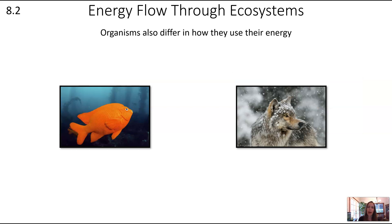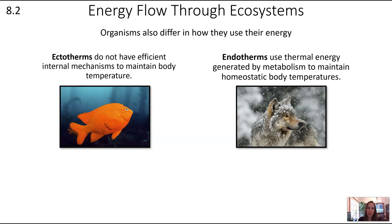Organisms also differ in how they use their energy. The fish on the left is an ectotherm — ectotherms do not have efficient internal mechanisms to maintain body temperature; they can change behavior to modify temperature but cannot produce adequate internal heat. Endotherms use thermal energy generated by metabolism to maintain homeostatic body temperatures, so regardless of external temperature, internal temperature stays balanced.